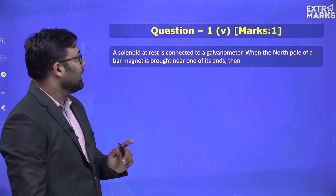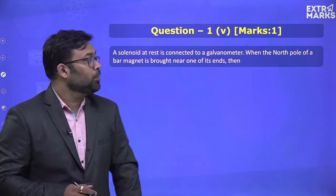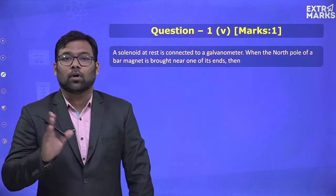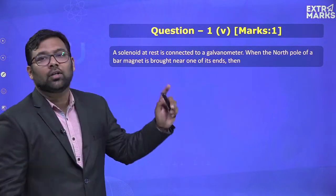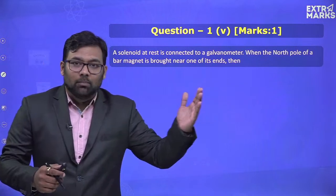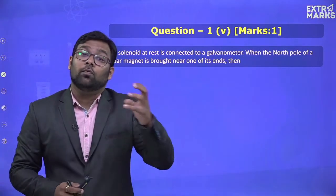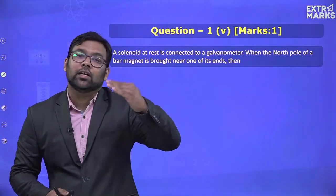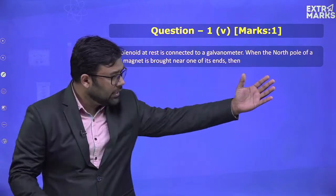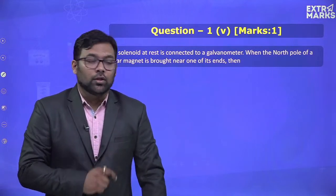Moving on to solenoid — a very important topic with a high chance of appearing in your exam. A solenoid is connected to a galvanometer, which can measure both the magnitude and direction of current. When the north pole of a bar magnet is brought near one end of the solenoid, the flux through the coil changes. Flux is the amount of magnetic field lines passing perpendicularly through a given area. When flux changes, a current is induced in the coil.